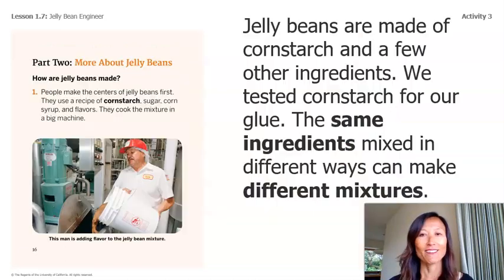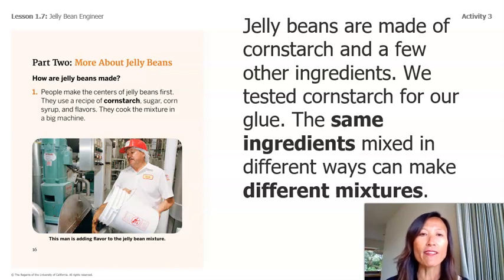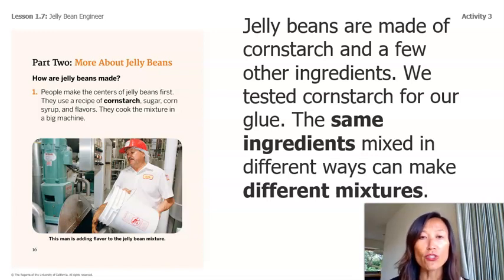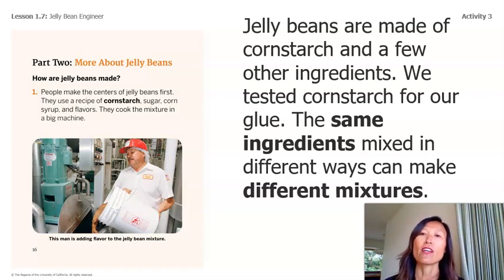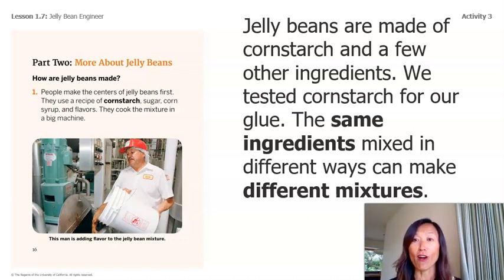Part 2: More About Jelly Beans. How are jelly beans made? People make the centers of jelly beans first. They use a recipe of cornstarch, sugar, corn syrup, and flavors, then cook the mixture in a big machine. The caption says, 'This man is adding flavor to the jelly bean mixture.' Jelly beans are made of cornstarch and a few other ingredients — we tested cornstarch for our glue. The same ingredients mixed in different ways can make different mixtures.